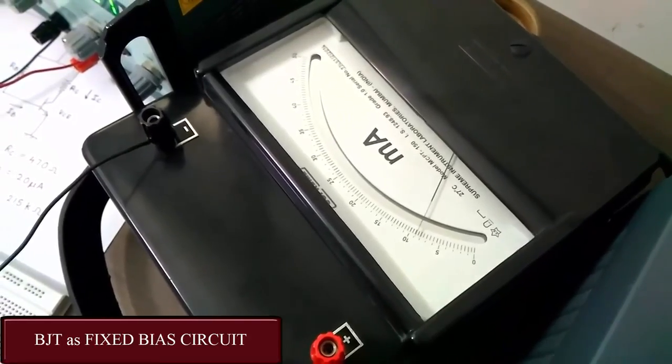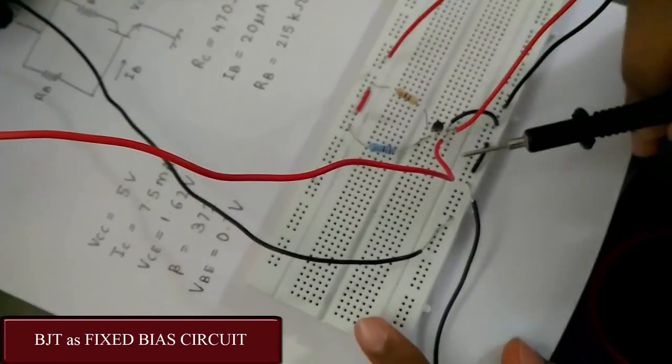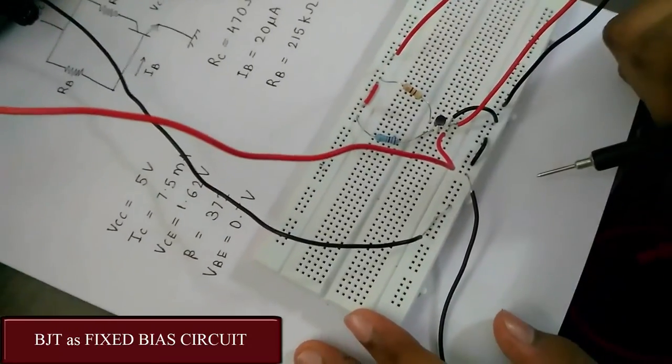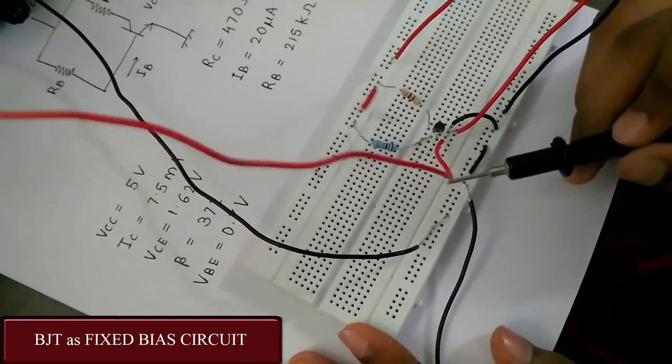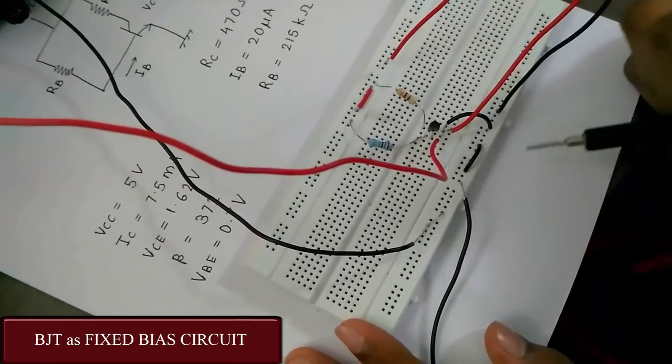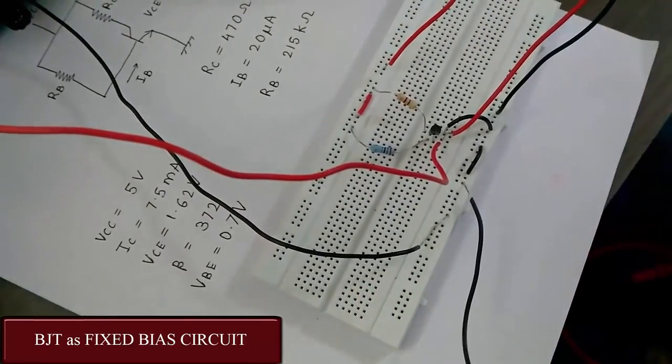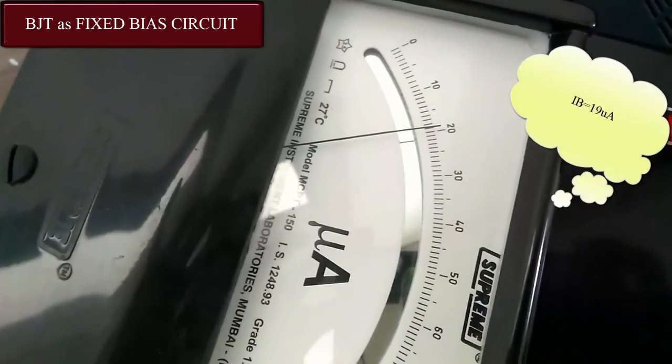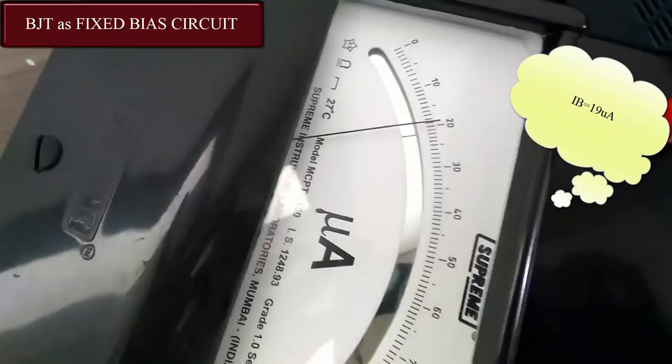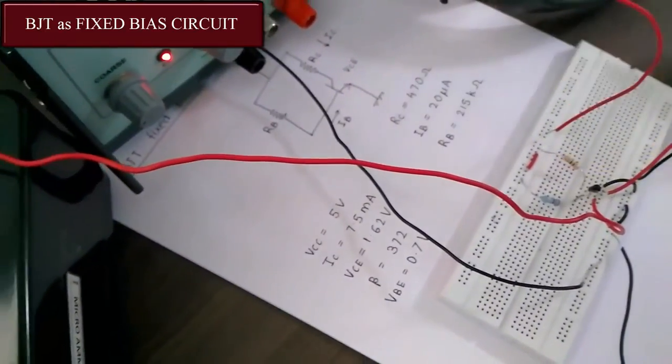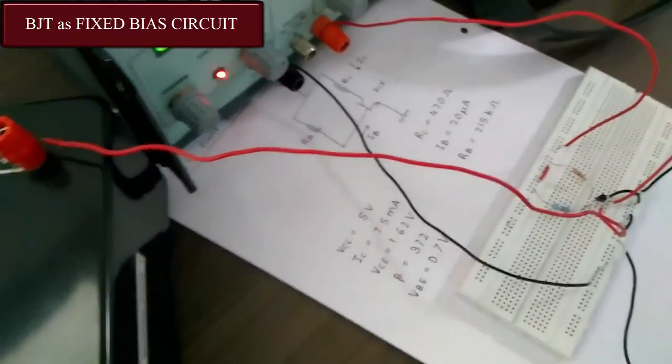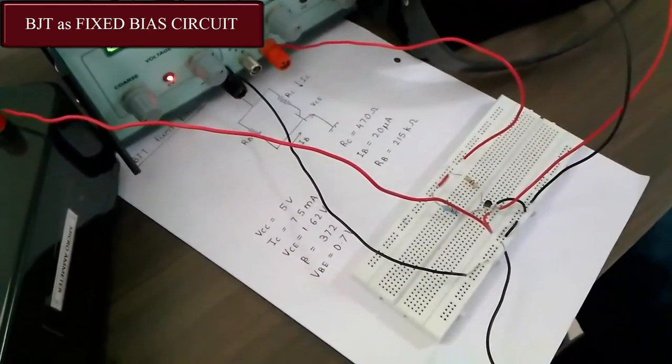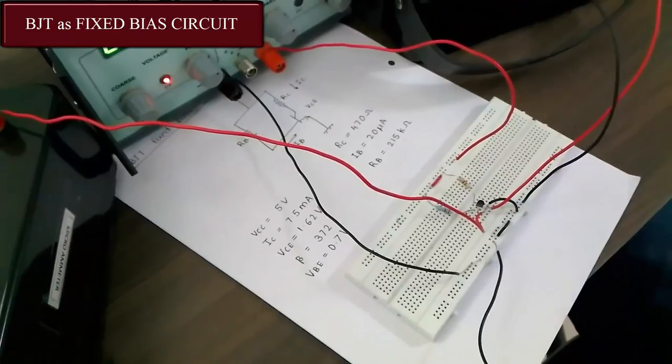Now let us check the value of IB. For checking IB, we have connected the positive of micro-ammeter to the base and the negative to the ground. Now let us see the value of IB. Here we can see that the value obtained is 19.5 microamps. That is very close to 20 microamps that we have obtained. So here we can conclude that the designing of fixed bias circuit is completed and the output is successful in terms of the given values.